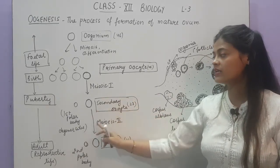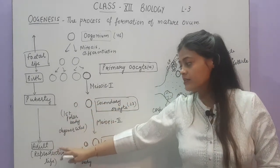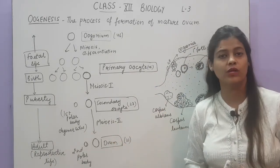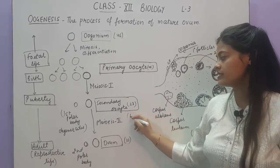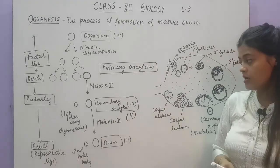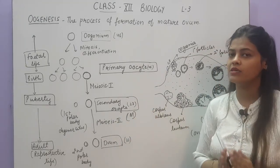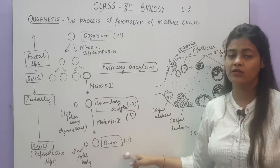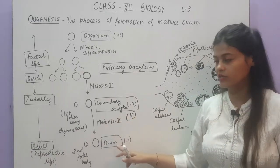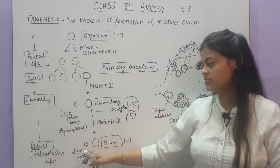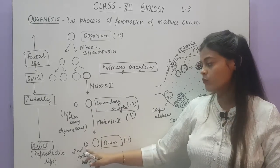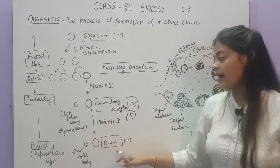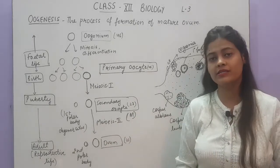At puberty, the female has only secondary oocyte in its body. In the adult reproductive life, it will be converted into ovum only when sperm enters the female reproductive tract. The secondary oocyte is arrested at the metaphase stage of meiosis 2. Meiosis 2 will proceed only when the sperm enters. In fact, ovulation takes place at the secondary oocyte stage. Then after meiosis 2, the ovum will be formed. One cell forms two — one becomes the second polar body that degenerates, and the other becomes the ovum.